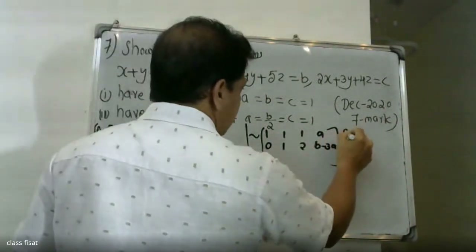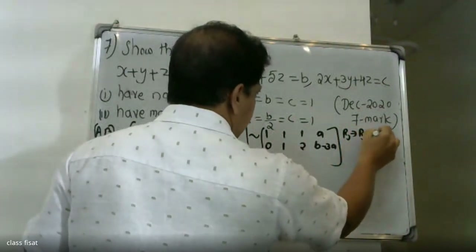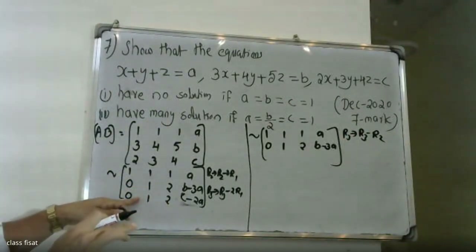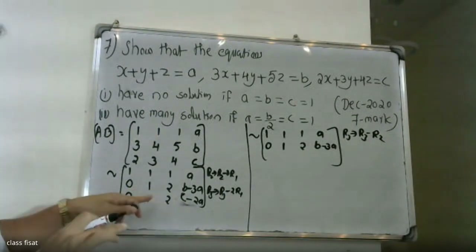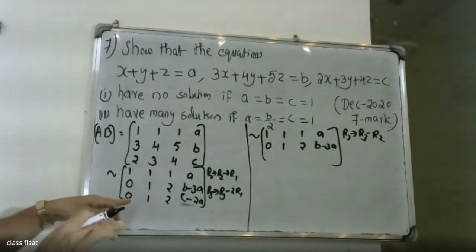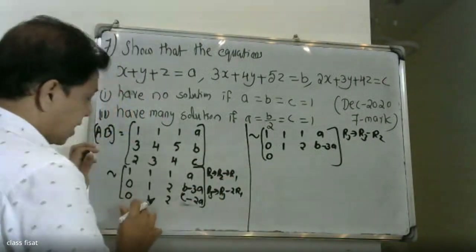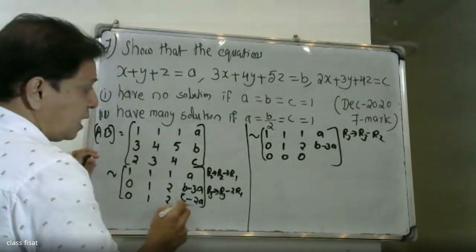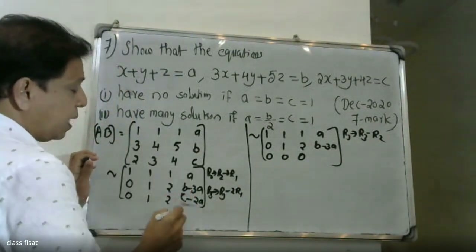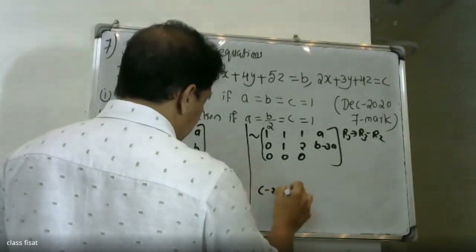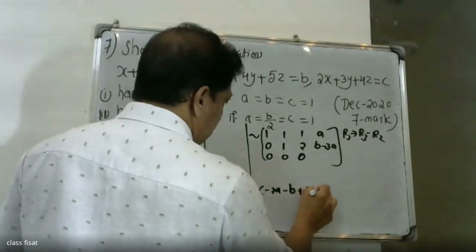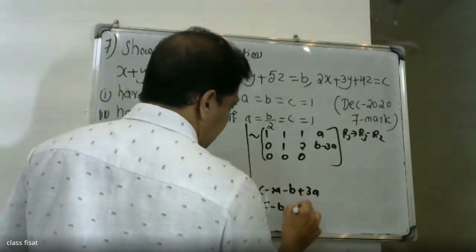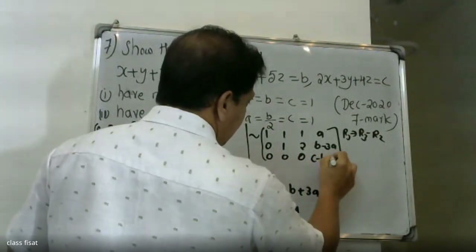R3 changes to R3 minus R2. The first element of the third row becomes 0, second element becomes 0, and the last element is c minus 2a minus (b minus 3a), which simplifies to c minus b plus a.